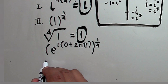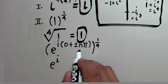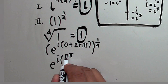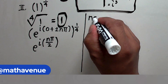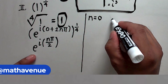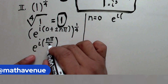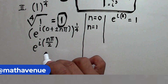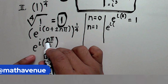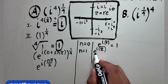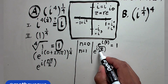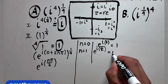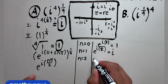Simplifying, this becomes e raised to i·(2nπ)·(1/4) = e^(i·nπ/2). For n = 0: e^(i·0) = 1. For n = 1: e^(i·π/2), where the angle is π/2 — that is the point i on the unit circle, with radius 1. So for n = 1 the value is i.